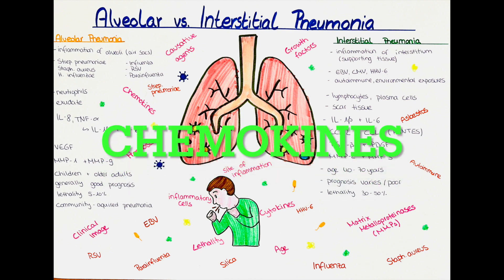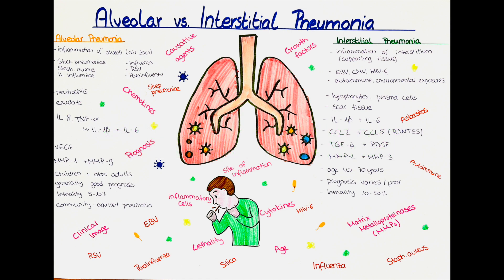Which chemokines play an important role? In alveolar pneumonia, CXCL8 and CXCL12 are chemokines important in the recruitment of neutrophils to the alveoli. CXCL8 is also known as leukotriene B4, while CXCL12 is also known as SDF1-alpha. In interstitial pneumonia, CXCL2 and CXCL5, also known as the rhontus, are chemokines important in the recruitment of lymphocytes and plasma cells to the interstitial space.